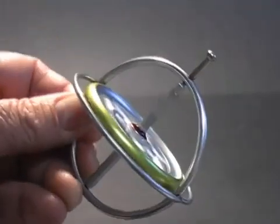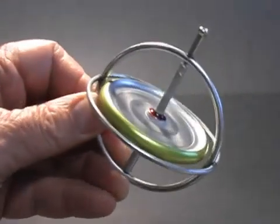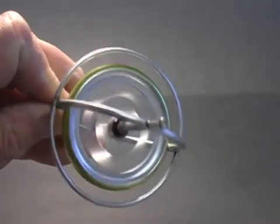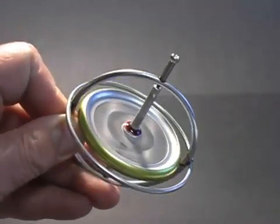The first thing I notice about the spinning gyroscope is that it resists attempts to change its position. A resistive force appears when I attempt to tilt or rotate the gyro.